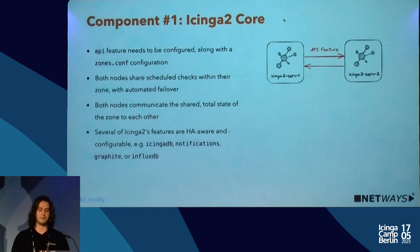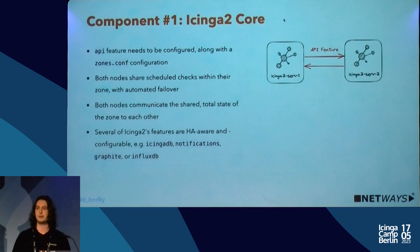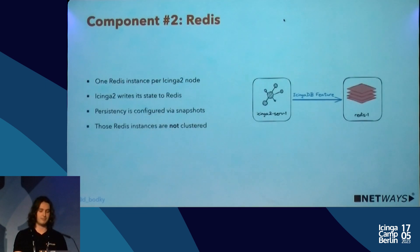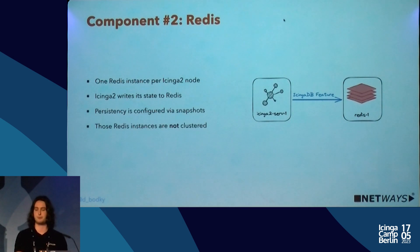Several of Icinga 2's features are high availability aware, featuring things like automated failover — like Icinga DB, as mentioned in an earlier talk — with a passive-active failover where one side just watches the other until it stops and then takes over. In an Icinga DB-backed setup, Icinga 2 writes its state to Redis. In a high available setup, we normally have two Redis instances, one per node, and each Icinga node writes its state to its local Redis instance.